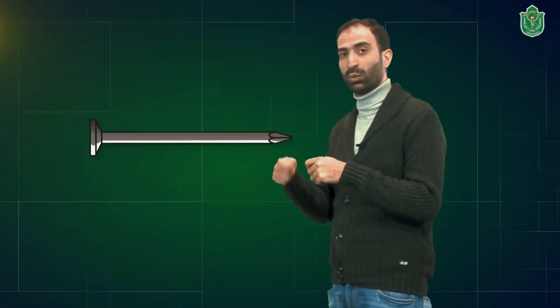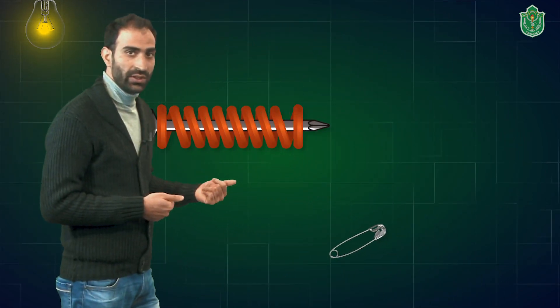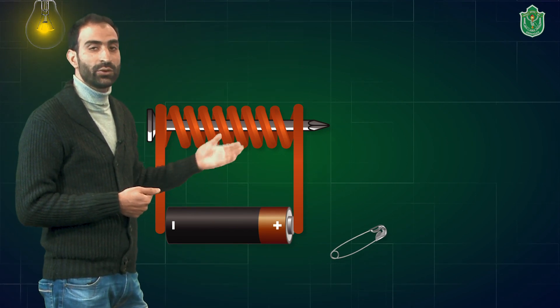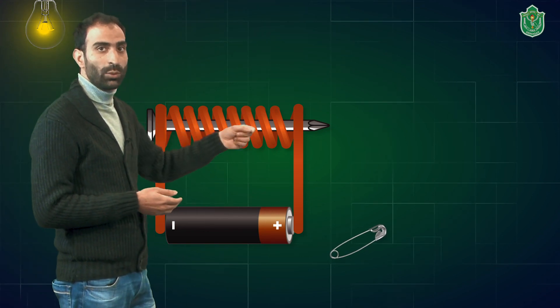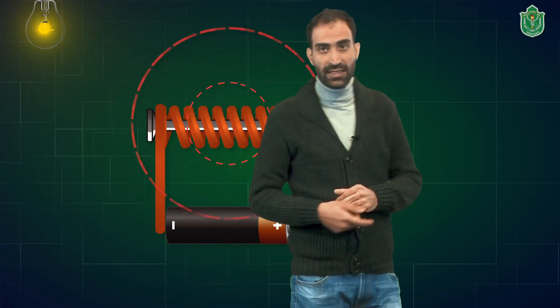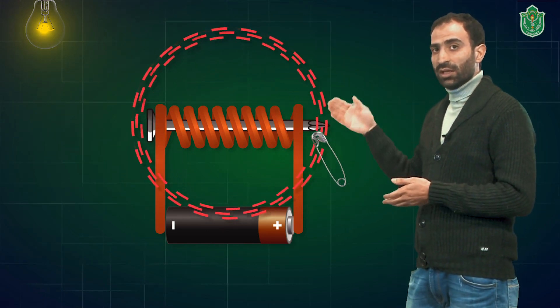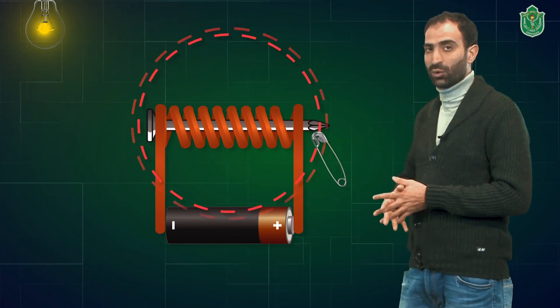First, we are going to remove the insulation from both ends of the copper wire and wrap it around the nail very tightly. Then we fix the two ends of the copper insulated wire to the two terminals of the cell — the positive terminal and the negative terminal. Our electromagnet is now ready. If you put small magnetic materials like small pins or nails near this nail, it will start attracting these small magnetic objects, thus indicating that current passed through the conducting wire has a magnetic effect — this is known as electromagnetism.